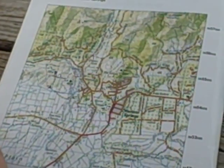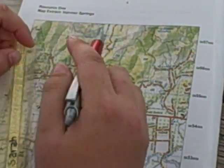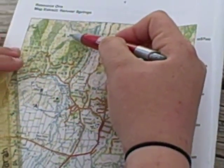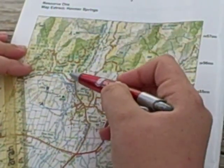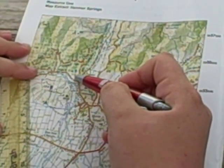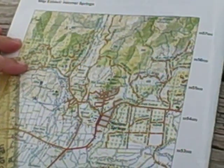Right, so first of all we need to calculate the difference in height between A and B. Point A is at 900 metres and point B is at 400 metres, therefore the difference in height is 500 metres.